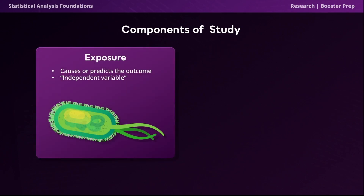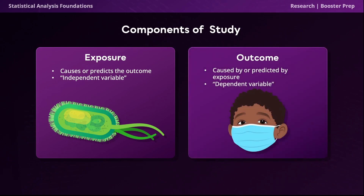Let's start with the exposure. The exposure is what causes or predicts the outcome, and we can think of the exposure as the independent variable in a study. Keep in mind that exposures are not always risk factors like a bacteria or a virus — they can also be protective factors such as fluoride varnish for teeth. We also have an outcome, which is caused by or predicted by the exposure. We can think of the outcome as the dependent variable in a study, or the variable that is being measured.